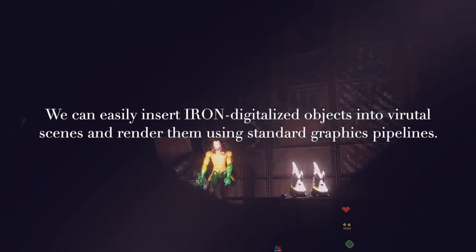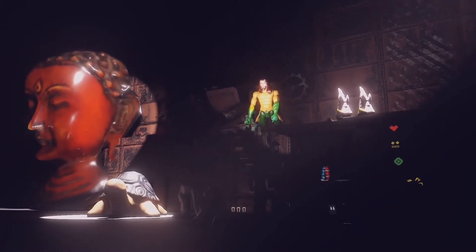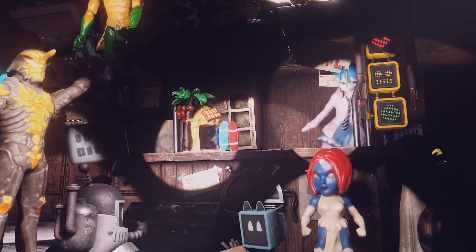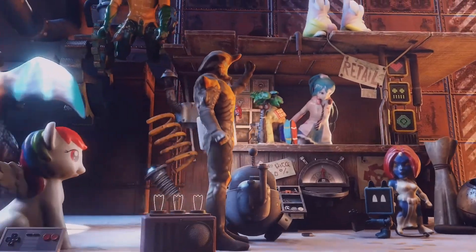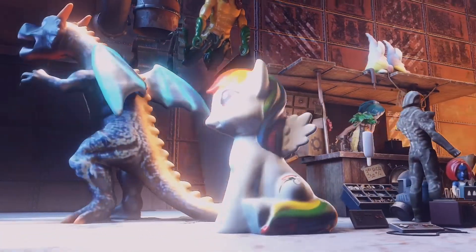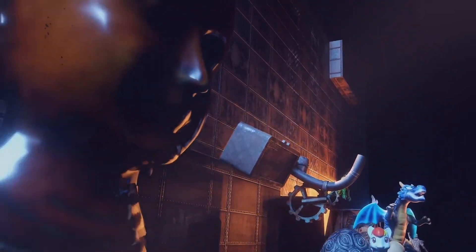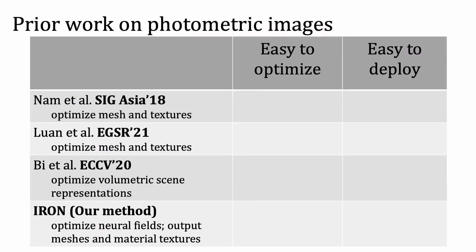We can easily plug the 3D assets created by our IRON system into existing graphics renderers. Note that unlike NeRF, which bakes the lighting into radiance fields, we reconstruct fully relightable models. Such models can be readily used in most 3D content creation pipelines. Unlike prior methods that rely on error-prone mesh operations or output non-standard 3D formats complicating integration with standard graphics renderers, our work is friendly for both optimization and deployment.